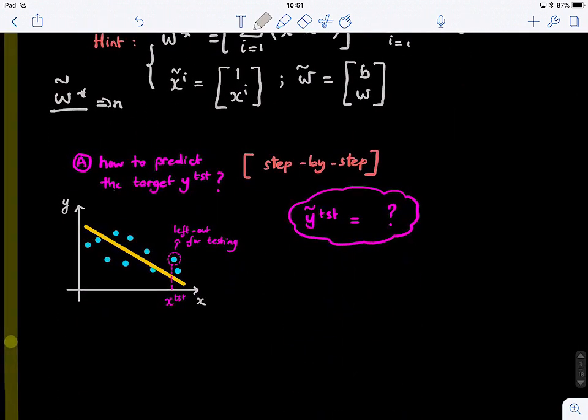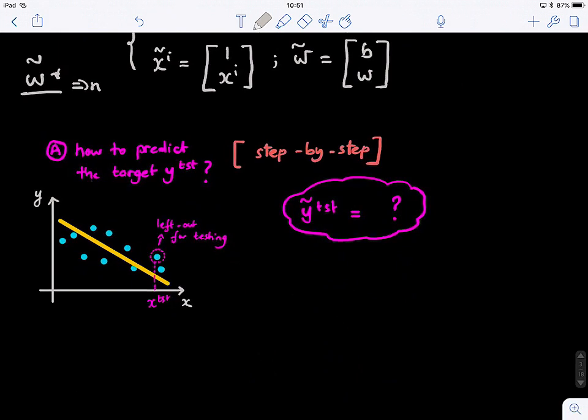So after we build our model, we want to predict on the testing subject that we left out. So how do we do that? This is my testing subject, the feature vector for my testing subject X test. And I would like to predict its value. So here I pretend that I don't see the ground truth. But I want to predict it because I built the model. So the prediction will be exactly this guy.